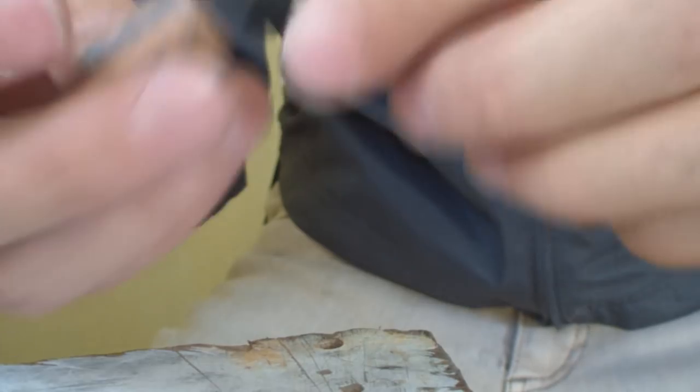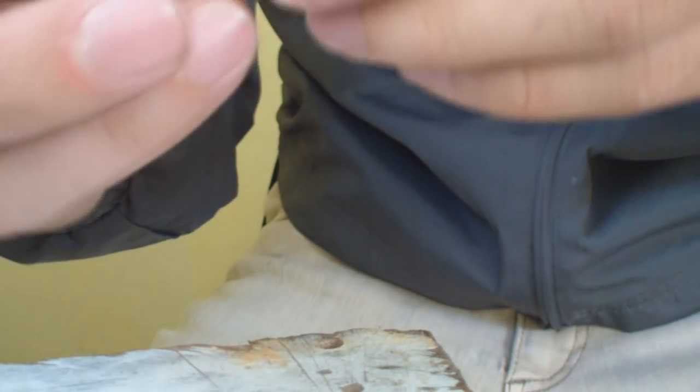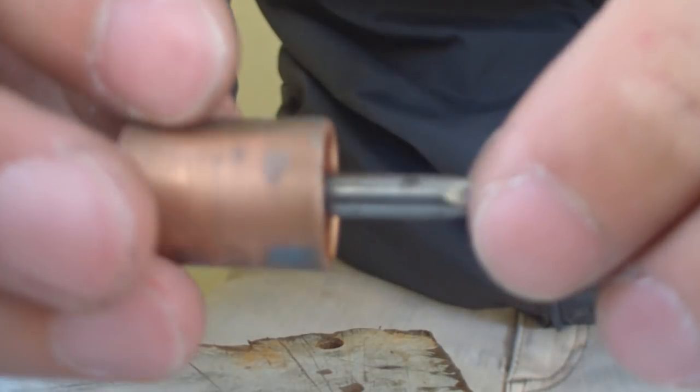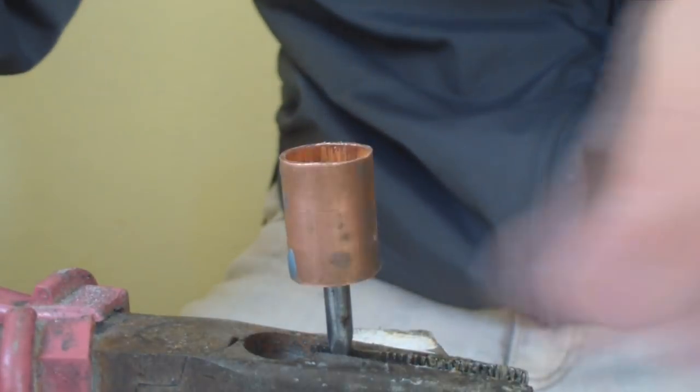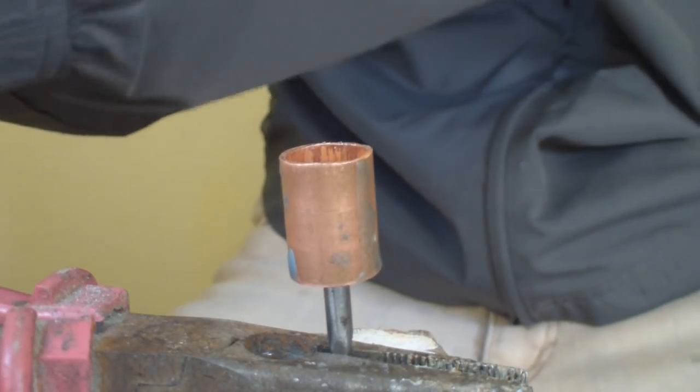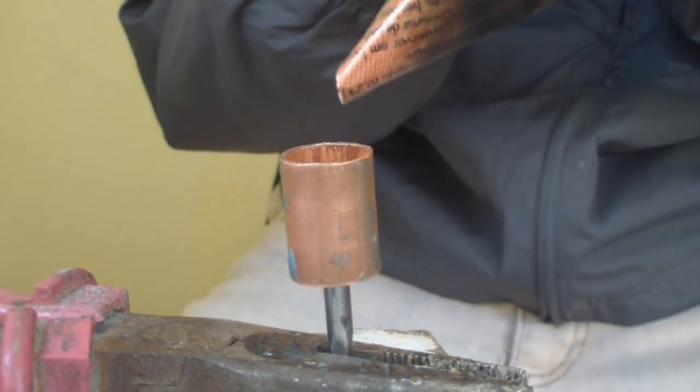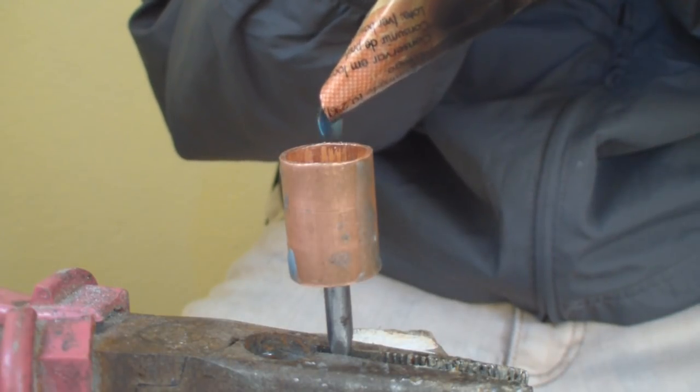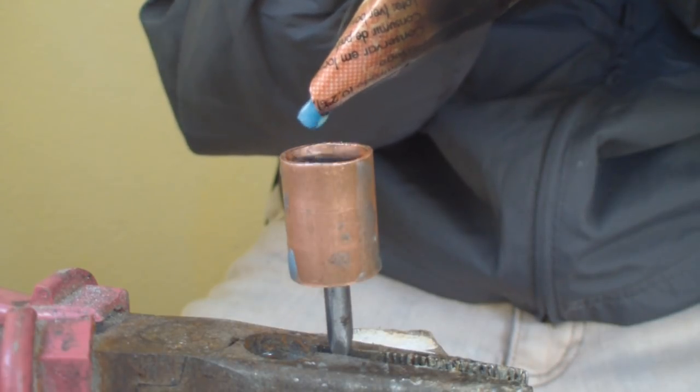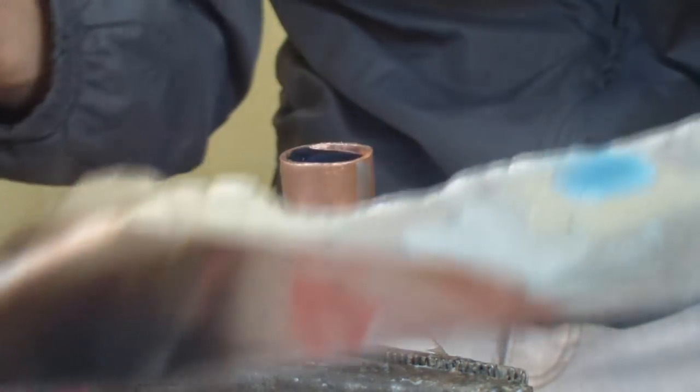So put a nail with the washer, then you put it inside the barrel. Then check if it's centered and fix it. Now just heat the wax again. Now just let it cool.